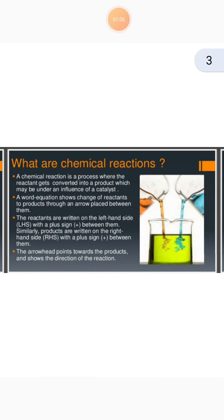First, what are chemical reactions? A chemical reaction is a process where the reactant gets converted into a product, which may be under the influence of a catalyst. A catalyst increases the speed of a chemical reaction. So, a chemical reaction is a process in which any reactant gets converted into a product. A word equation shows the change of reactants to products through an arrow placed between them.